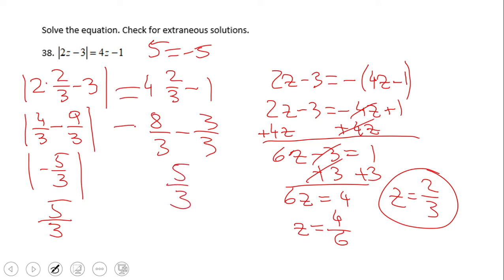So it looks like this one works. 5 thirds and 5 thirds. So this is a good solution. It's not extraneous solution like the other one.